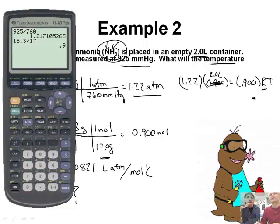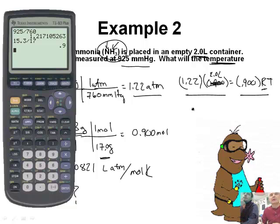n is 0.900 times R times T, and R is 0.0821. So I'm going to divide both sides by 0.900 and R.